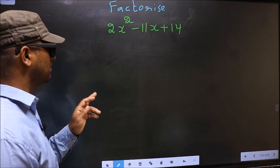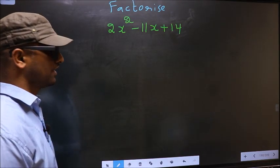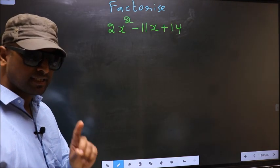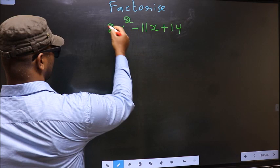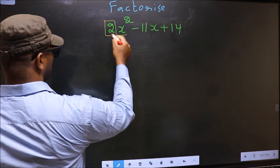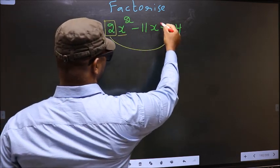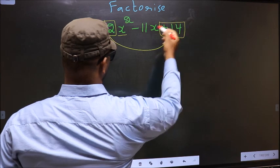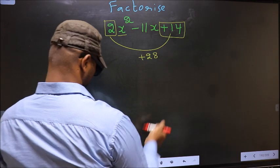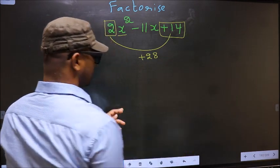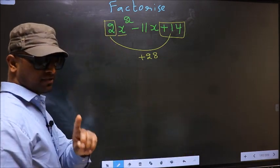Factorize 2x² - 11x + 14. Step 1: The coefficient of x², that is 2 here, should be multiplied to the constant +14. So 2 into +14, we get +28. This is your step 1.